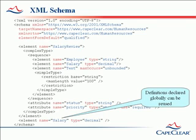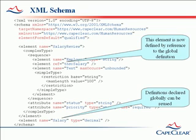Definitions in an XML schema can be declared globally and then reused elsewhere. We say that a definition is global if it is immediately inside the schema root element. Elements, attributes, complex types and simple types can all be declared globally and then reused. Here we see the addition of a second global element to our XML schema. This global element can now be referenced from elsewhere within the XML schema.